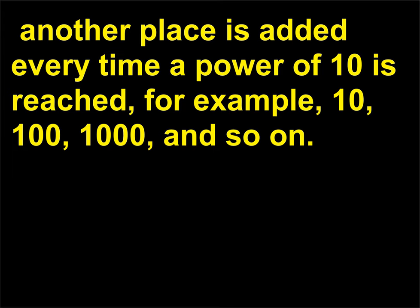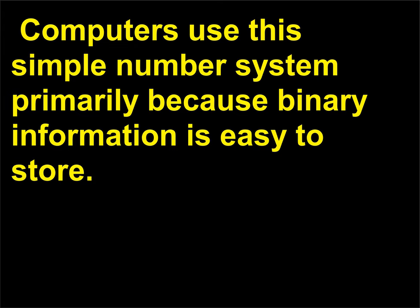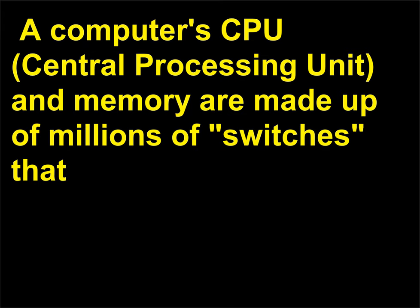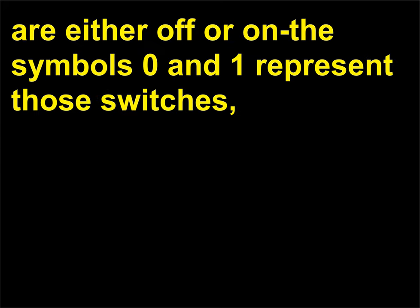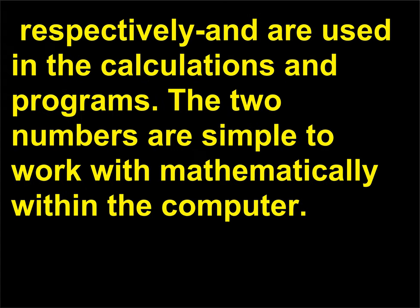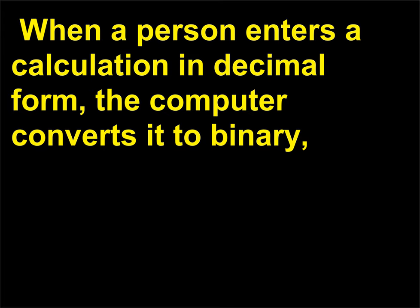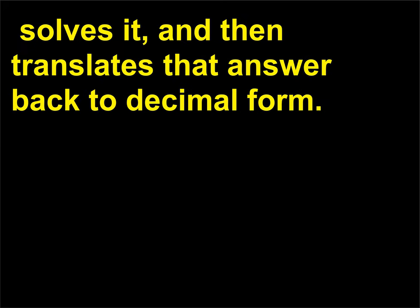Another place is added every time a power of 10 is reached — for example, 10, 100, 1,000, and so on. Computers use this simple number system primarily because binary information is easy to store. A computer's CPU, central processing unit, and memory are made up of millions of switches that are either off or on; the symbols 0 and 1 represent those switches respectively, and are used in the calculations and programs. When a person enters a calculation in decimal form, the computer converts it to binary, solves it, and then translates that answer back to decimal form.